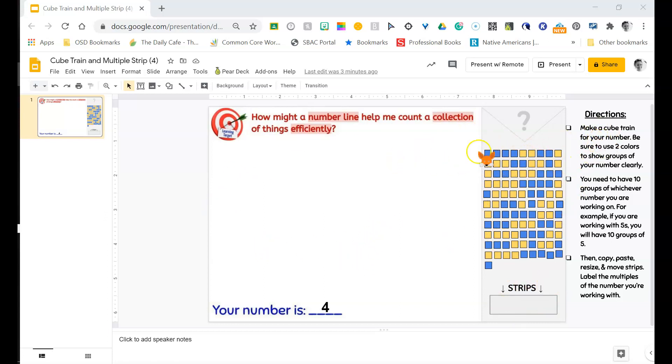So the first thing I'm going to do is make a cube train for my number. I'm going to take a cube, one, two cubes, three cubes, and I'm using these lovely lines that Google Slides gives us to help make sure that they're all nice in a straight train here so I can see them really clearly. And four cubes. My first train is done. Awesome.